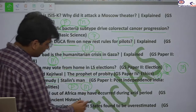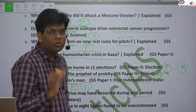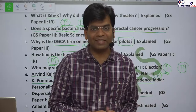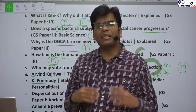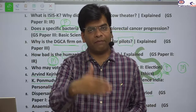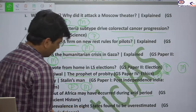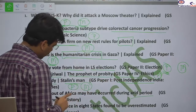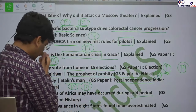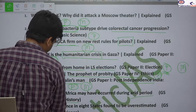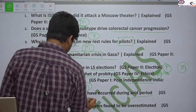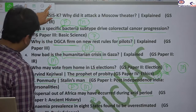We will study the new view on the dispersal out of Africa, which may have occurred during the arid period — not the humid or wet period as previously believed. About 80,000–90,000 years ago, humans started dispersing from Africa to other parts of the world. This is helpful for ancient history as well as basic science, and is relevant for prelims.